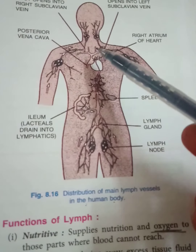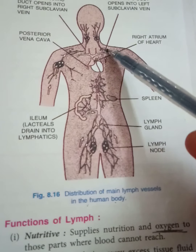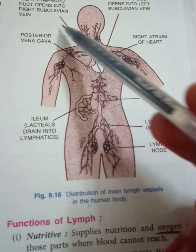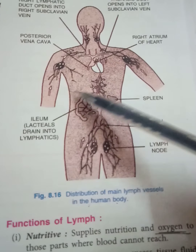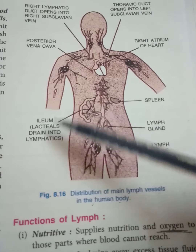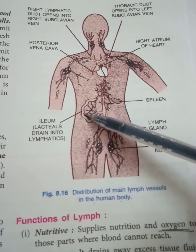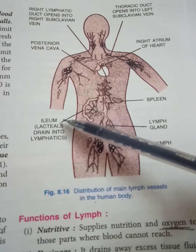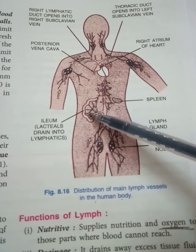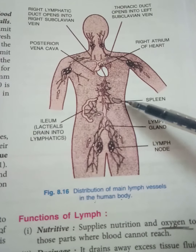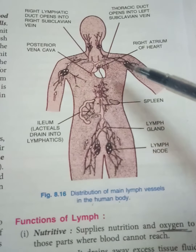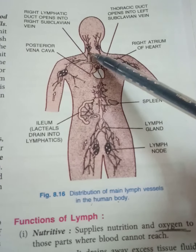The diagram shows the distribution of main lymph vessels in the human body. The thoracic duct opens into the left subclavian vein, and the right lymphatic duct opens into the right subclavian vein and posterior vena cava. Lacteals drain into lymphatics of the ileum — the ileum has villi, and we had a labeling of lacteals. Fats are mainly absorbed by lacteals.